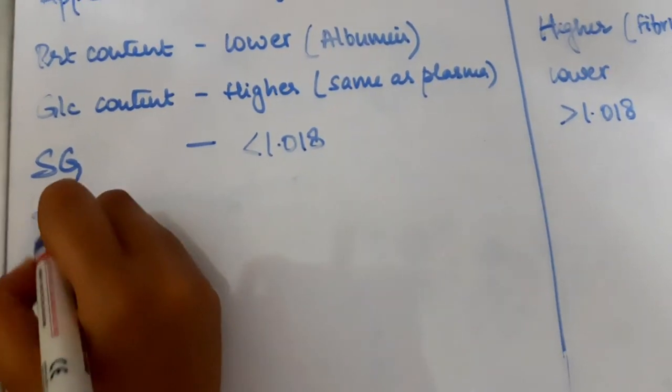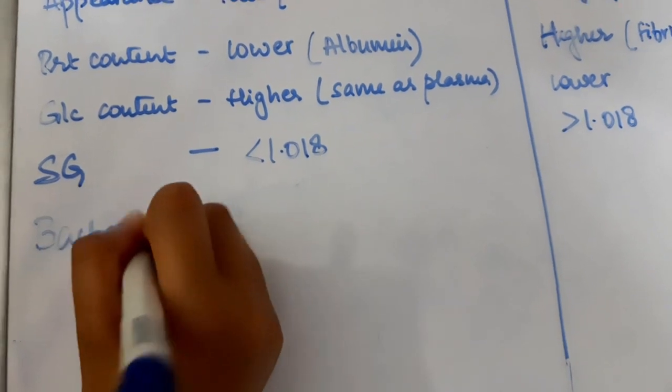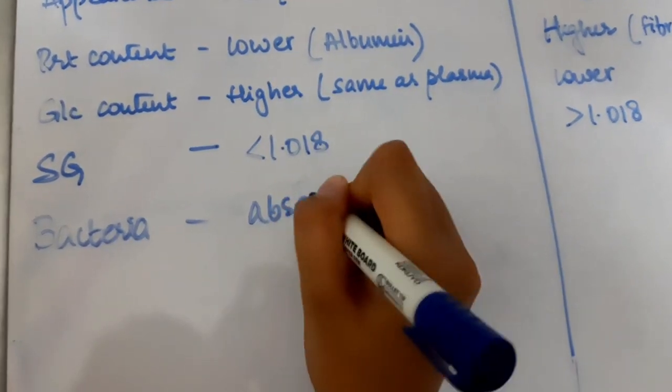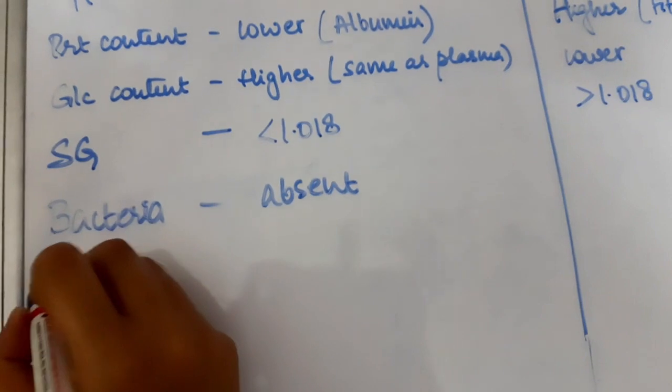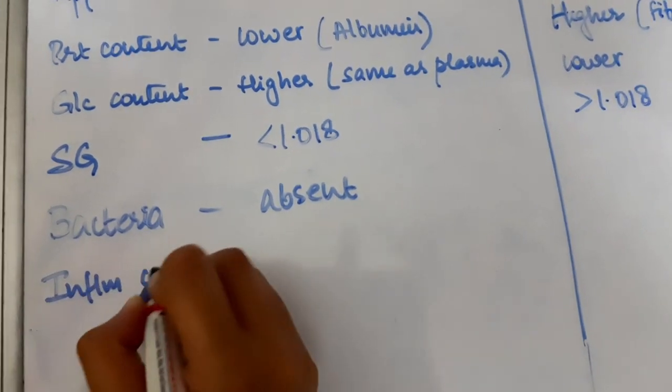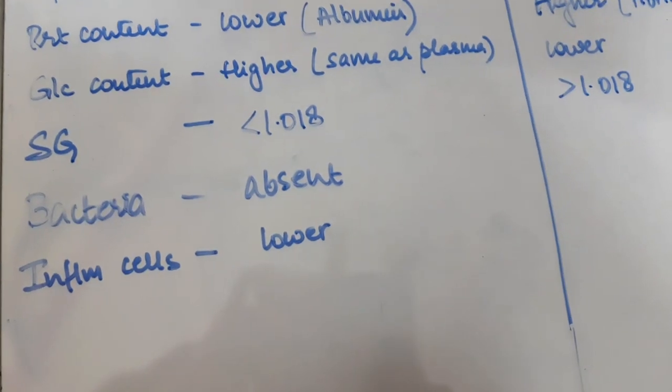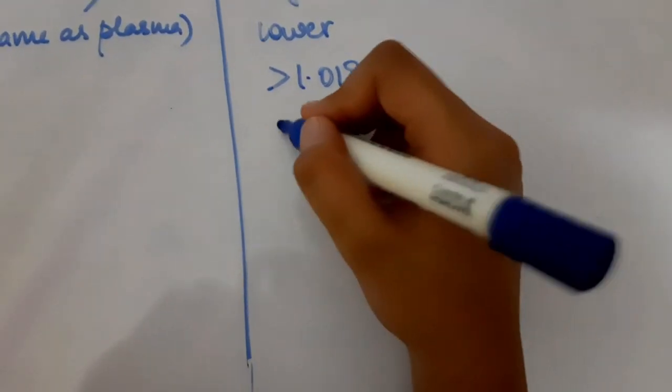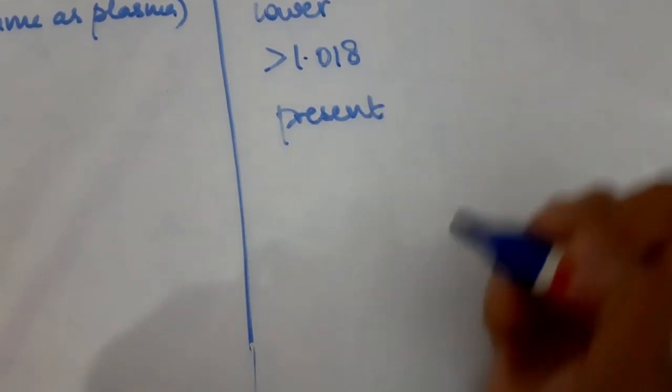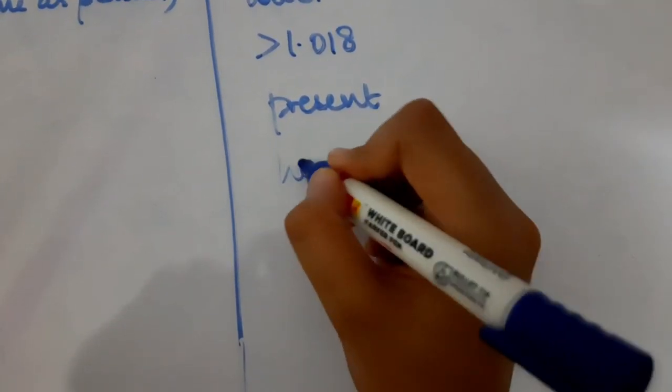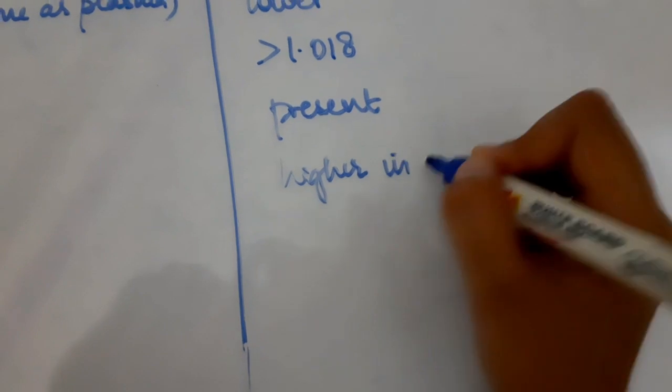Since transudates are caused by non-inflammatory conditions, bacteria are absent and inflammatory cells are very few in number. Whereas since exudates are caused by inflammatory conditions and infections, there will be a high number of bacteria and also a high number of inflammatory cells.